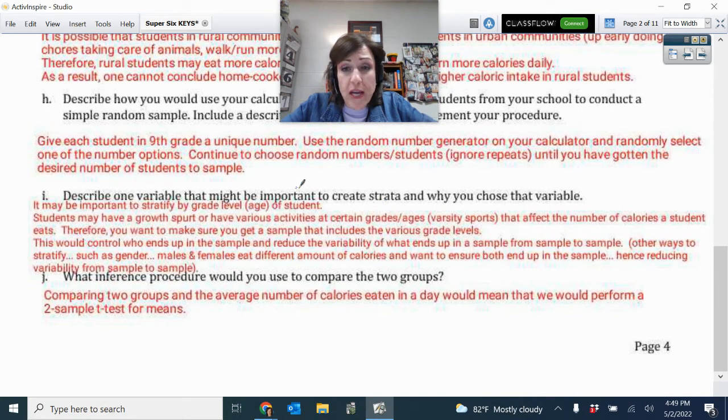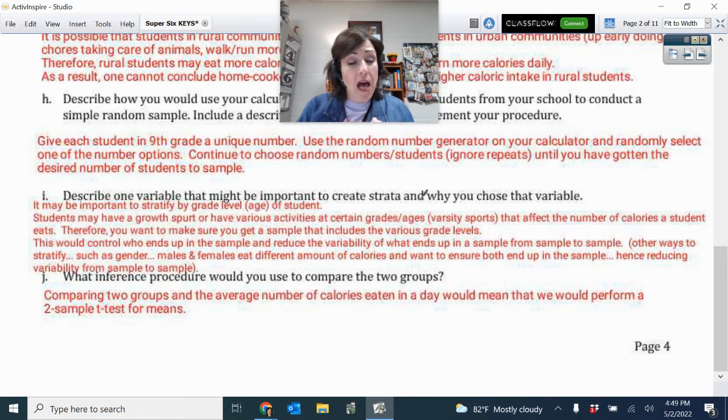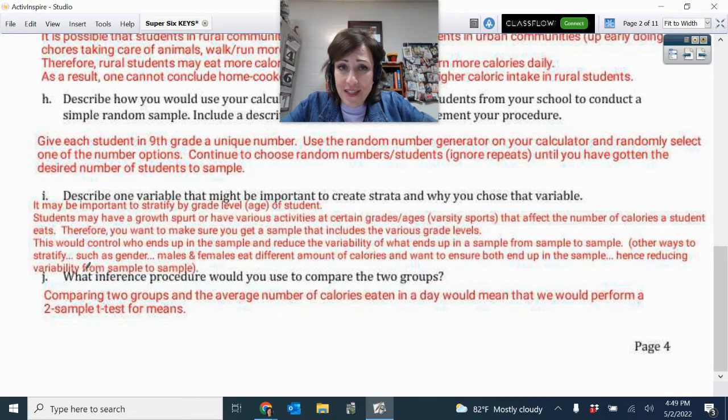Describe one variable that might be important to create strata and why you chose that. I chose something different than the answer key had chosen. I chose do the variable by or organize by grade level or age because maybe the age of the student would have an impact on how much the student is eating. Or, you know, various growth spurts happening earlier. They're for boys. Or maybe if they're more varsity sports, they're eating more different things. The key suggested males versus females because the males and females may be eating different amounts and having different caloric intake. So, in fact, that's, I think, what led to this question.